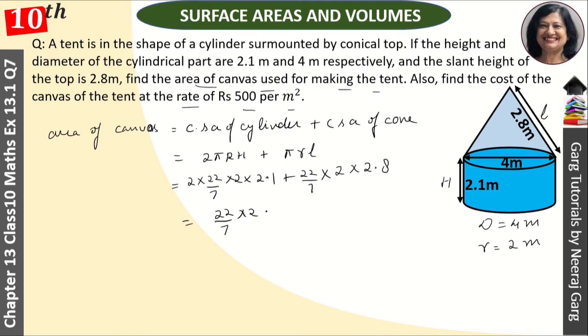Or 2 ko bhi common lelete hai. So bracket me bachega 2 into 2.1, plus yaha bachega 2.8. So yaha a gaya 44 upon 7. And this is 4.2 plus 2.8.